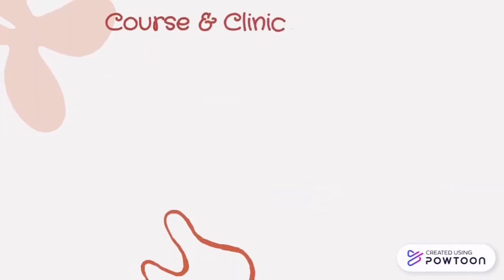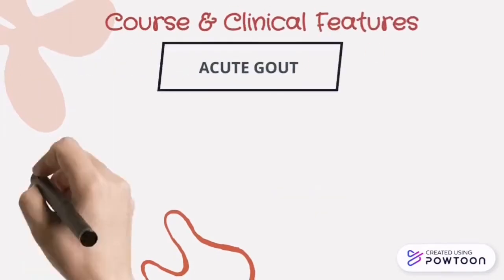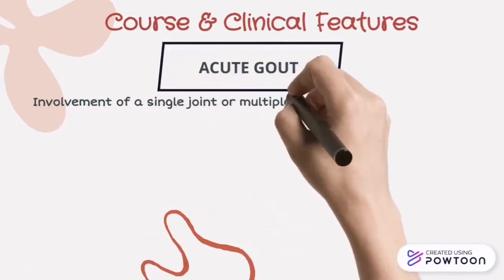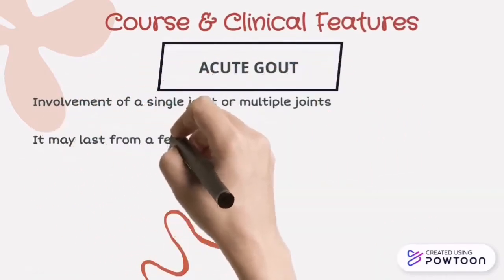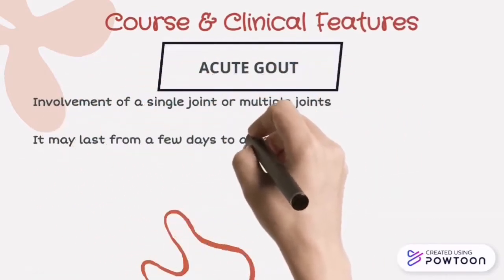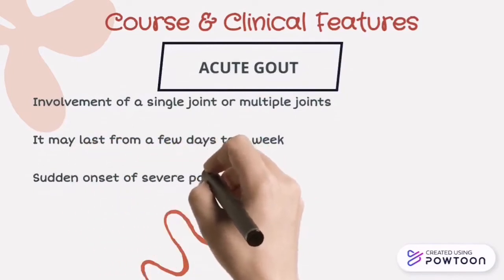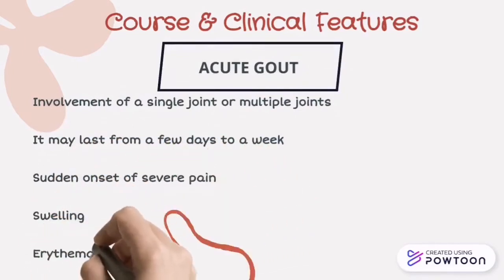For the course and clinical features, we will compare acute gout and chronic gout. For acute gout, it involves one single joint or multiple joints, may last from a few days to a week, with sudden onset of severe pain, swelling, and erythema.